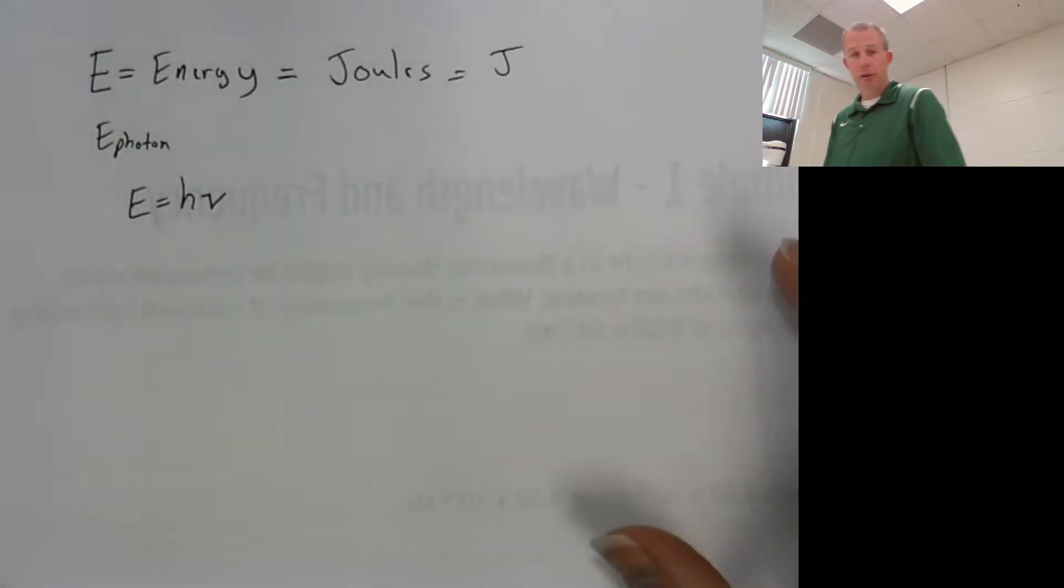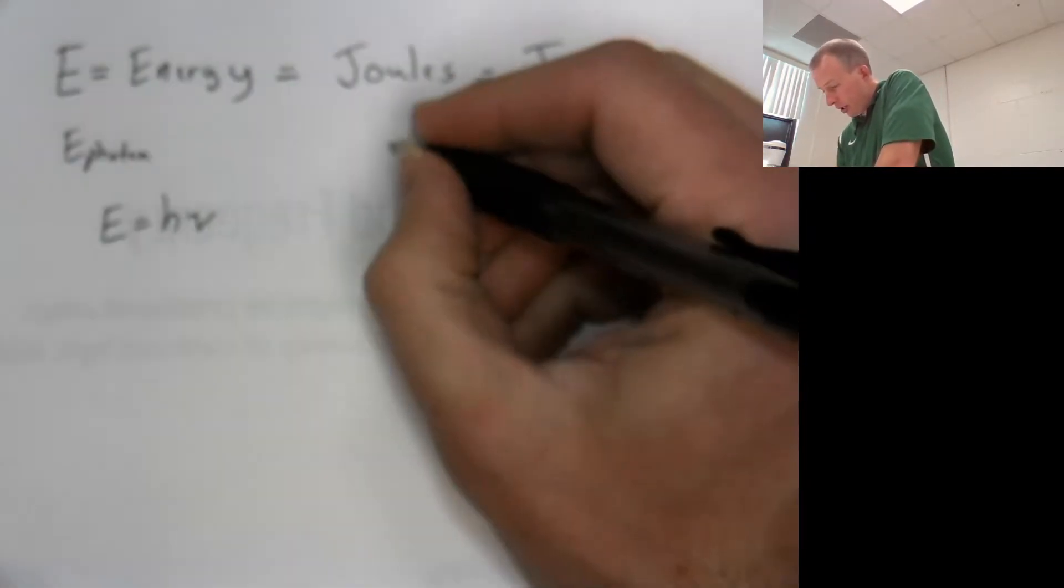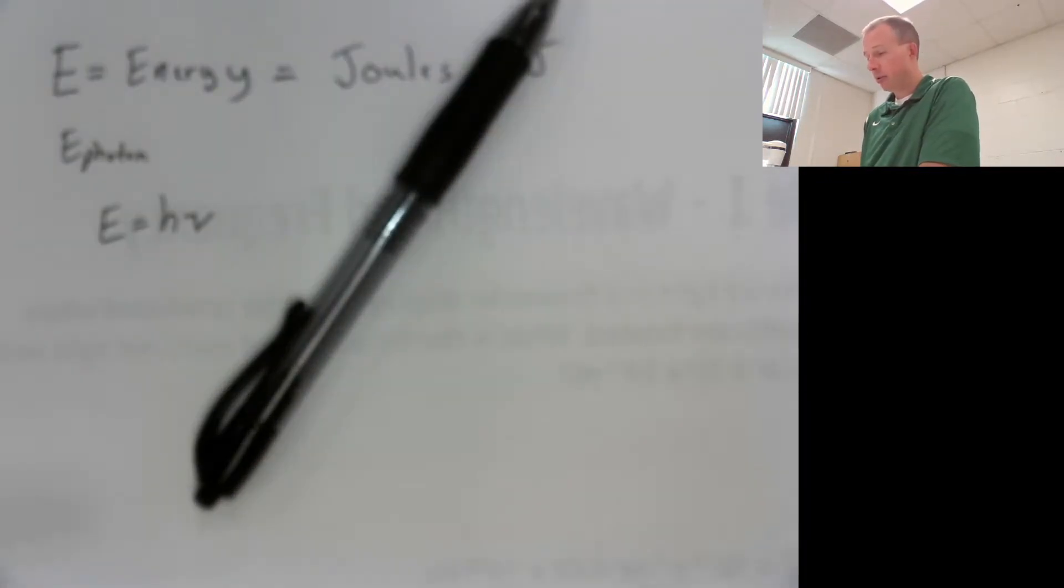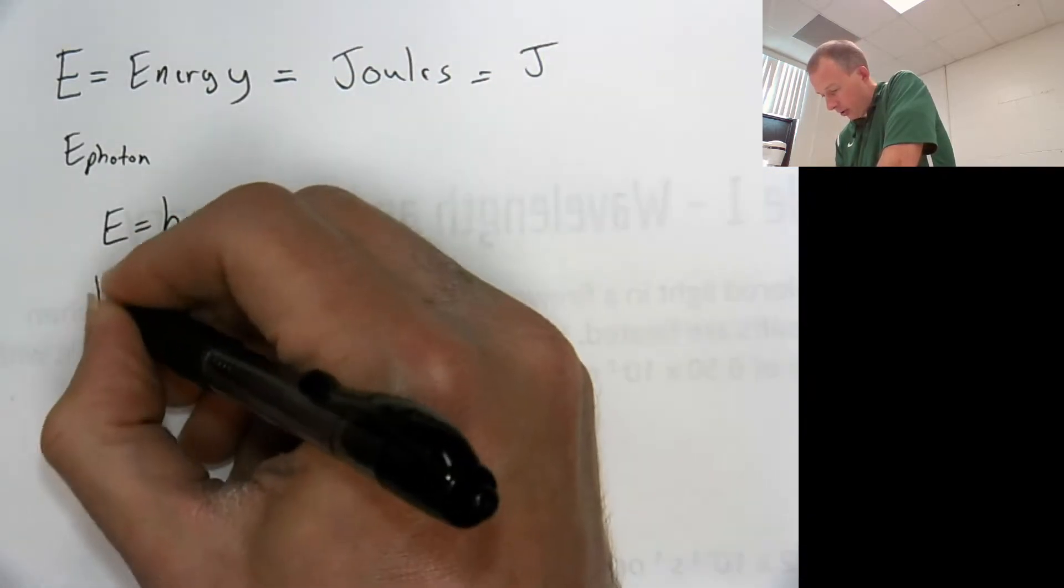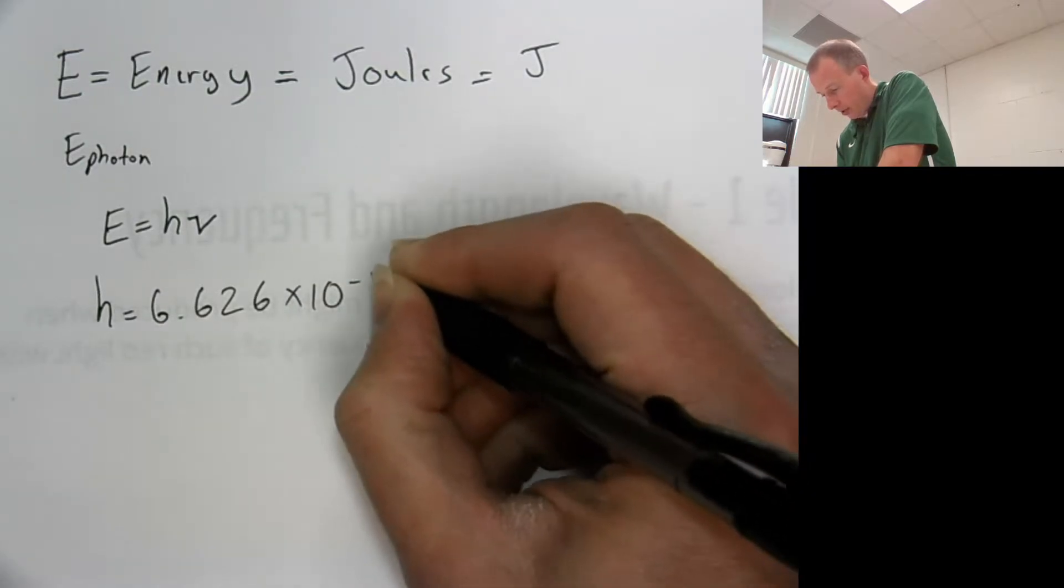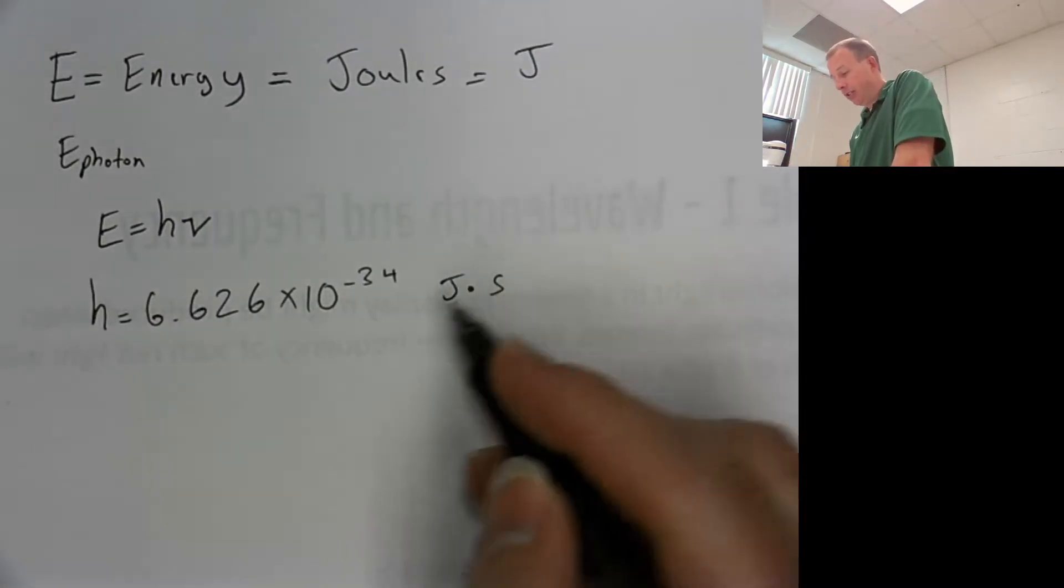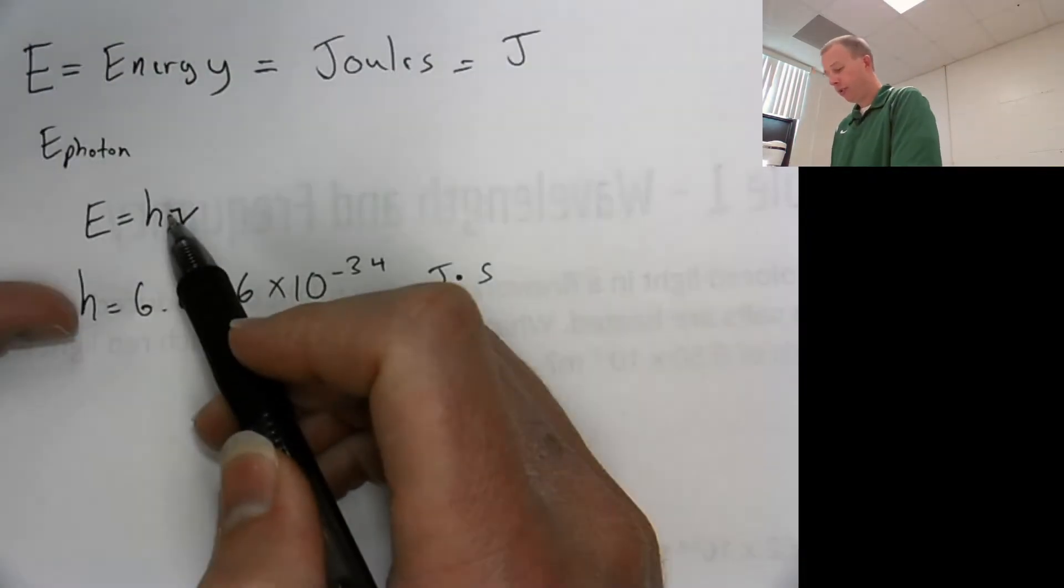H though - we talked about it before - H is another constant. H is called Planck's constant. So H is always 6.626 times 10 to the negative 34th joules times seconds. It's quite a special number, and that is honestly probably the smallest quantity, the smallest numerical thing that you will ever see in your life. Anytime you see H, it's just this thing. You're just going to plug it in like anything else.